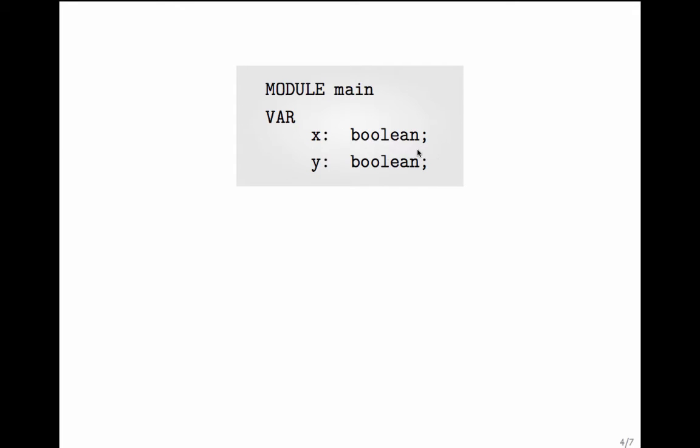Consider this NuSMV program where you add one more boolean variable. Already you had x to be a boolean variable. Now suppose you add a y. How many states would this code produce?